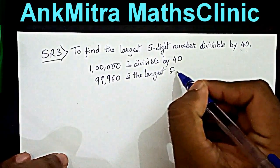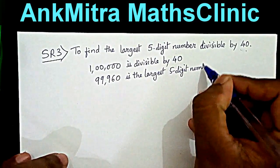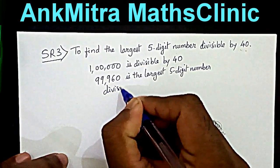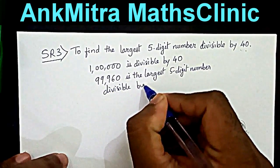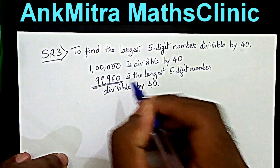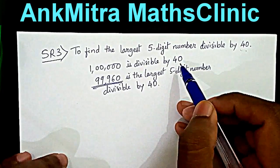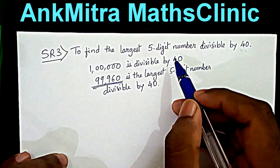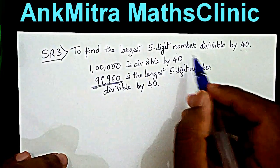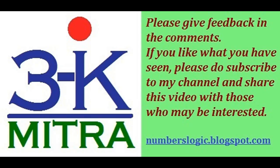So the trick was to find the smallest six-digit number divisible by 40 and then subtract 40 from it to get the required answer.